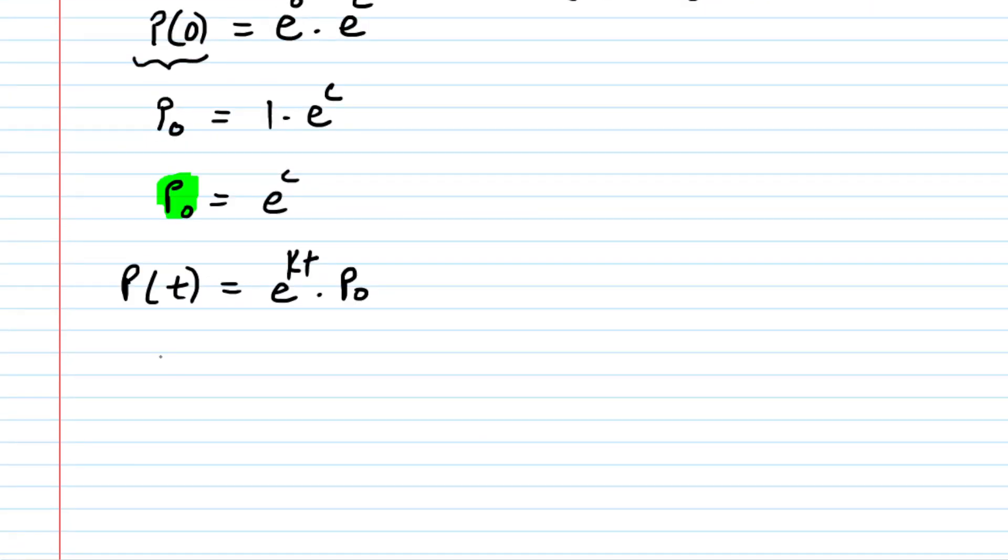So we went ahead and made that substitution. Let's just switch the order on the right-hand side so that we have P0 times e to the kt. And this is the final solution of the original differential equation.